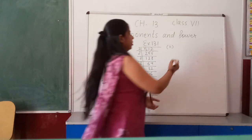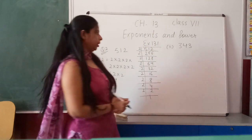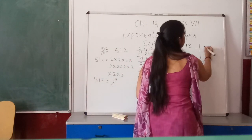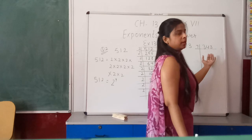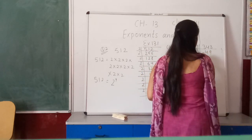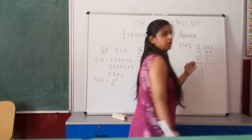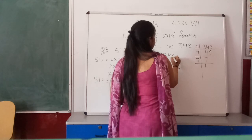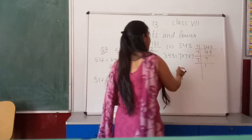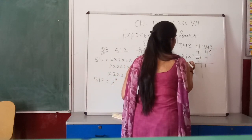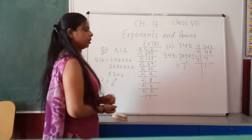Second part: if we have 343, by applying the prime factorization method using divisibility test by 7, we get 7 × 7 × 7. So 343 = 7³. We can write 343 in exponential form as 7 raised to power 3.